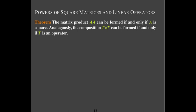The matrix product A times A — we use exponents when you have a repeated matrix product, so it is a true multiplication. A squared, A cubed, they all have meaning. But A times A can only be performed when A is square, and the composition of T composed with itself can only be performed when T is an operator.